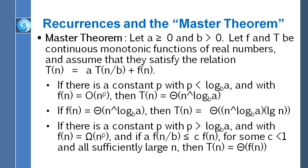If there's a constant p such that p is less than the base b log of a, and such that little f of n is little o of n to the pth power, then it can be asserted that capital T of n is equal to capital theta of n raised to a power. And the power is the base b log of a. n raised to the base b log of a. So that's the first case.